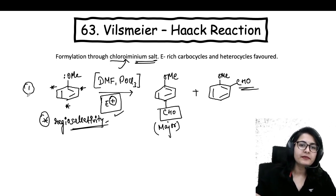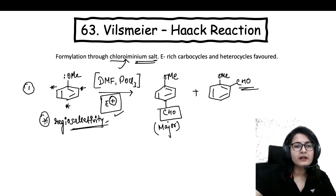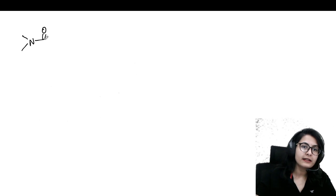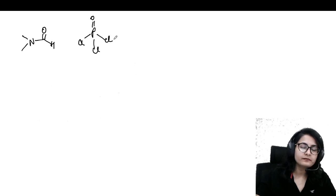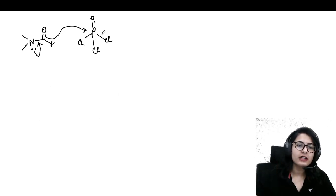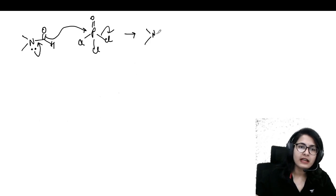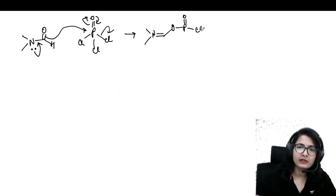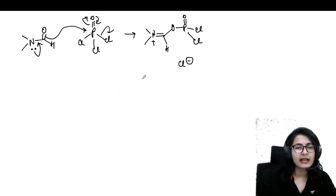Let's consider the mechanism. First, take the DMF and POCl3 combination. DMF is dimethylformamide. POCl3 is tetrahedral in shape. Nitrogen assists the oxygen to attack over phosphorus. The whole reaction is driven because oxygen-phosphorus bonding is very strong. This gives an intermediate with OPOCl2 attached to the oxygen, a hydrogen present, one Cl- has been lost, and nitrogen has a positive charge.